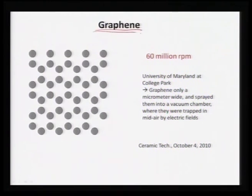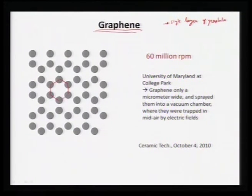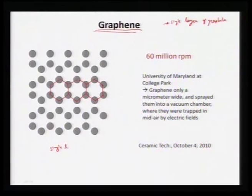Graphene is nothing but a single layer of graphite. We can see the overall hexagonal structure that is predominant in the graphene layer. The beauty of graphene is that it has very high thermal conductivity as well as very high strength — fracture strength can be as high as around 200 gigapascals, and the modulus can be as high as 1 terapascal. That is what we are talking about with graphene.